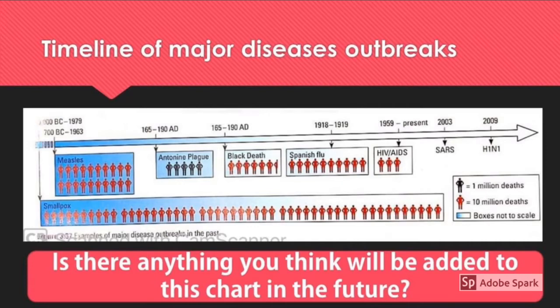Let's start by looking at major disease outbreaks in human history. We've had struggles with major disease outbreaks throughout history, but the problem is we tend to forget the lessons history brings and continue to plow on. Looking at page 201 in your textbook, there's a diagram of historical outbreaks — it ends at 2009, and the one that stretches the longest has been smallpox.